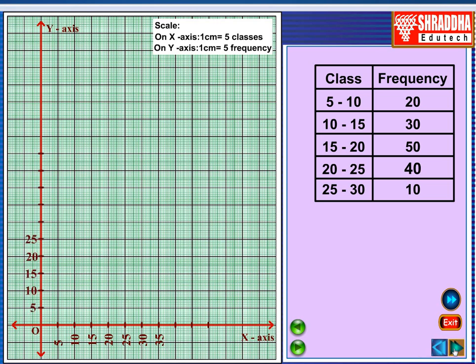On Y axis, 5, 10, 15, 20, 25, 30, 35, 40, 45 and 50. The Frequency. On X axis, classes will be given. On Y axis, Frequency will be given. Scale, you have to write here. On X axis, 1 cm is equal to 5 classes. On Y axis, 1 cm is equal to Frequency 5.